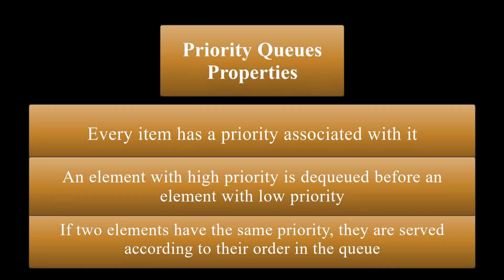To summarize the properties of priority queues, we can say that every item has a priority associated with it. An element with higher priority is dequeued before an element with lower priority. And if two elements have the same priority, they are served according to their order in the queue.